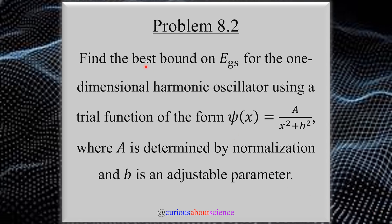And so our problem today is: find the best bound on E_gs for the one-dimensional harmonic oscillator using a trial function of the form ψ(x) = A/(x² + b²), where A is determined by normalization and b is an adjustable parameter.